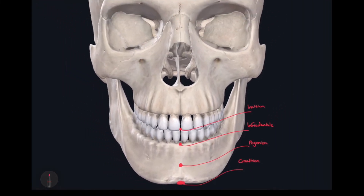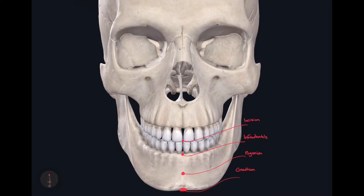Let's zoom this image out a little bit more. This next craniometric point is kind of hard to see in this image, but right here on the midline, on the alveolar process — the most inferior tip of the alveolar process of the maxilla — this is called alveolare. Now just barely superior to the alveolare, we have our next craniometric point, called the prostion, which is the most anterior point on the mid-sagittal plane on the alveolar process of the maxilla. So alveolare is the most inferior point, and prostion is the most anterior point on this alveolar process.